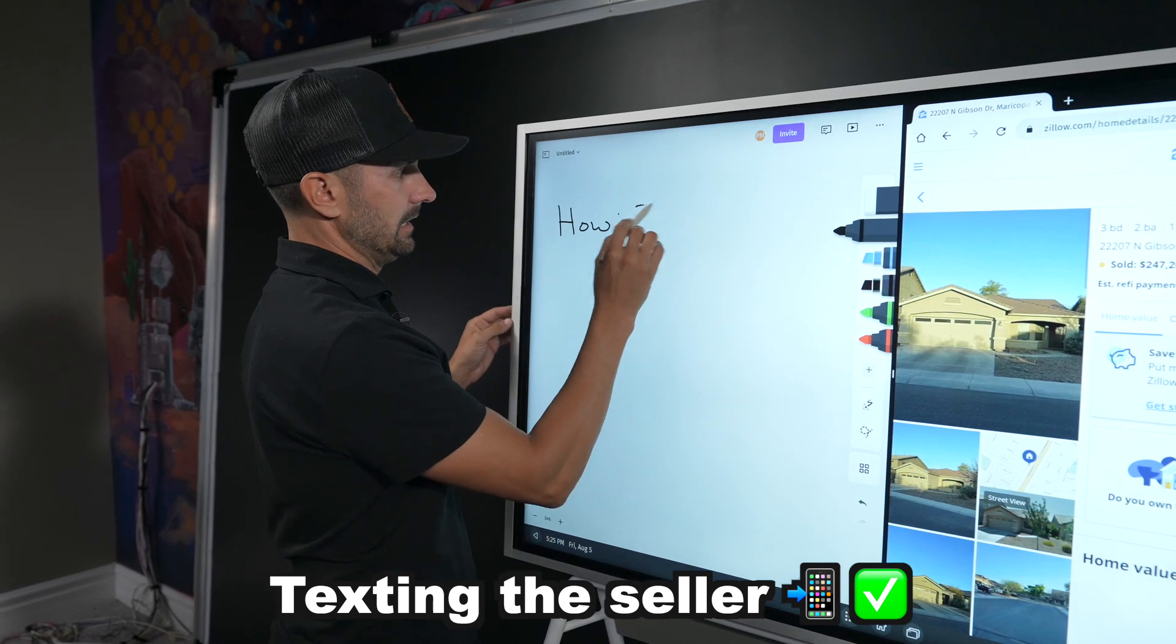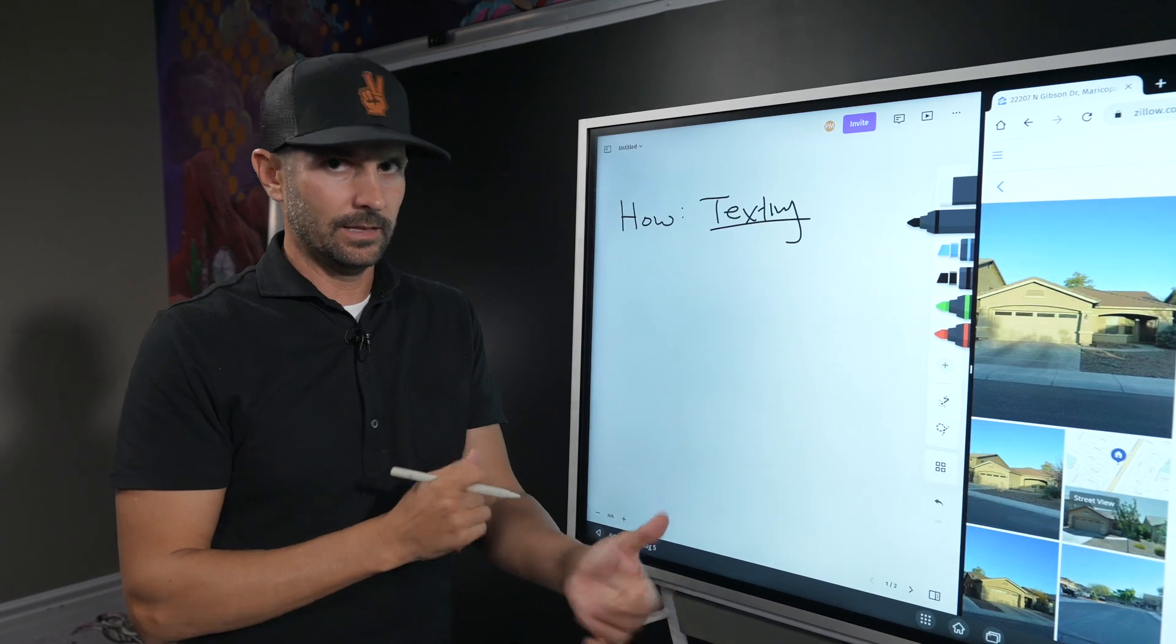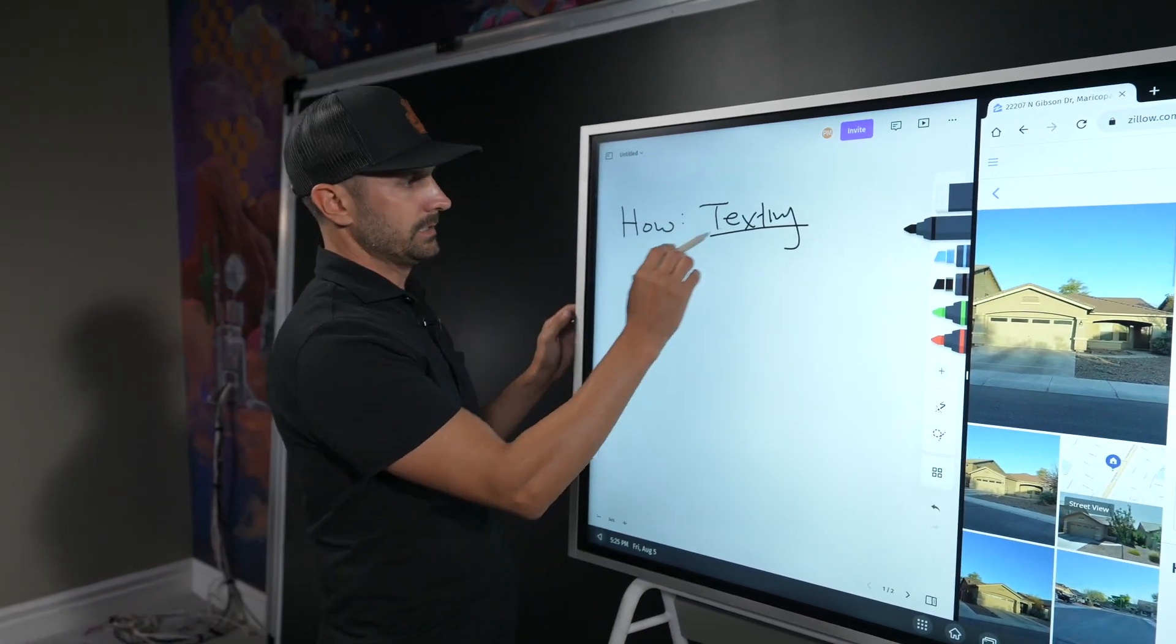How did we get the deal? We got the deal from texting the seller. What does that mean? What were we texting? How did we know to text him? Where did we get his number?